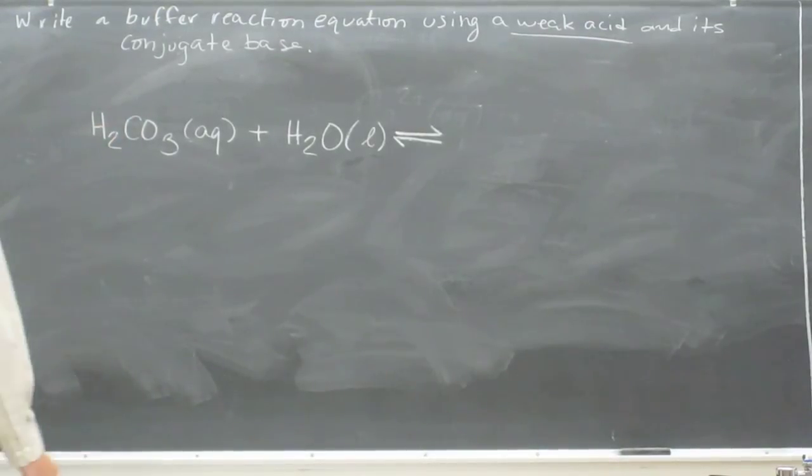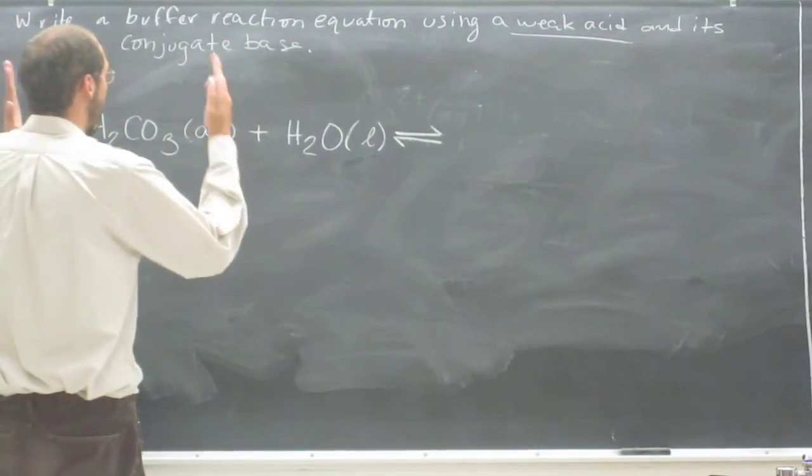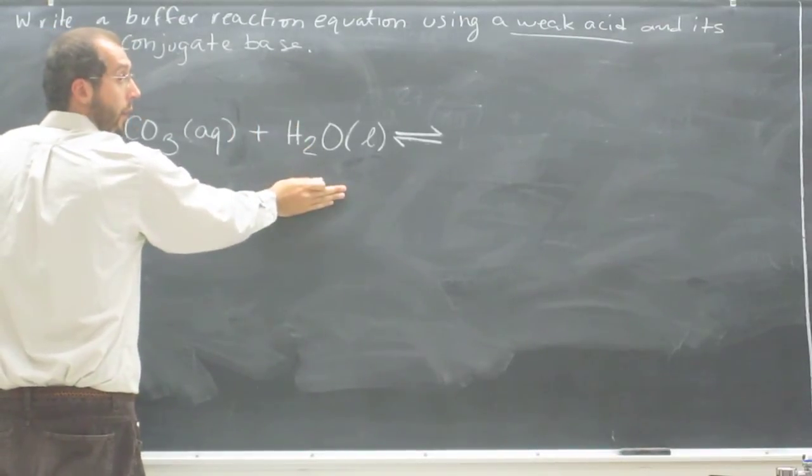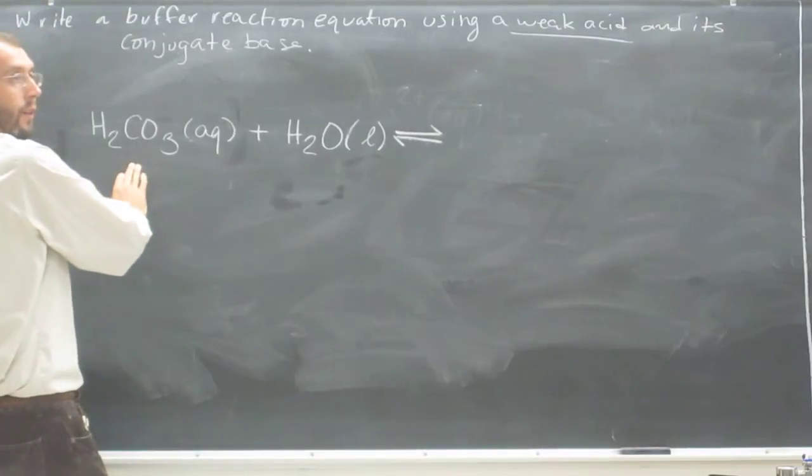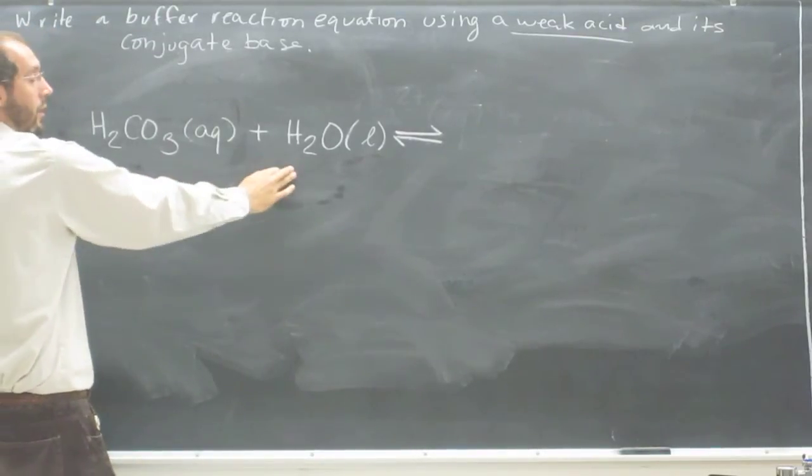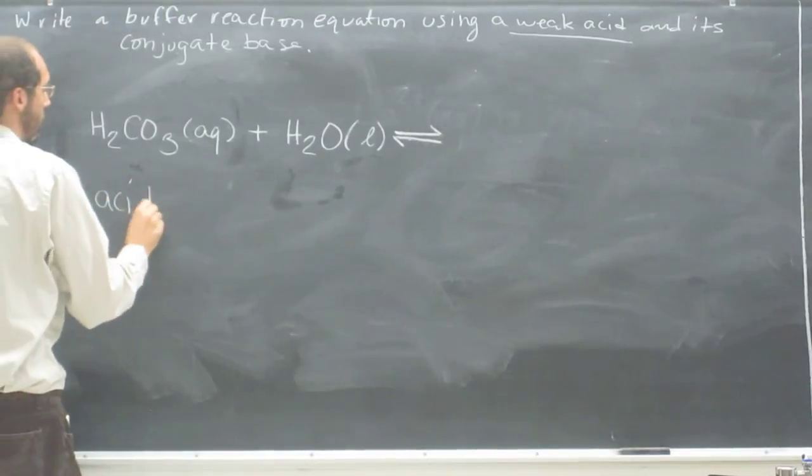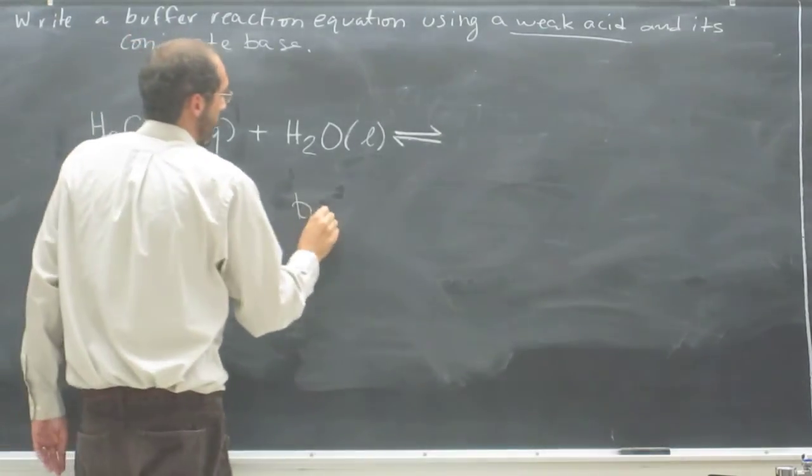And so all you've got to really do is figure out, I've got a weak acid. Here's my weak acid. I'm going to combine that with water. So now I've got to figure out, what's the conjugate base of this, and what's the conjugate acid of this? So remember, this is your acid. This is your base here.